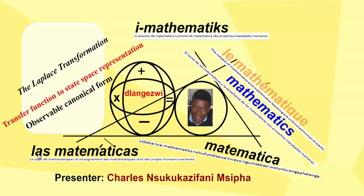We are looking at state-space representation using the approach of obtaining observable canonical form.